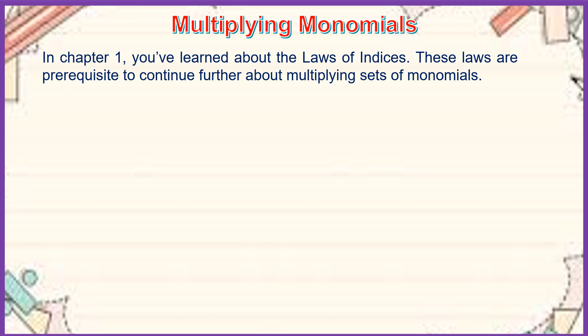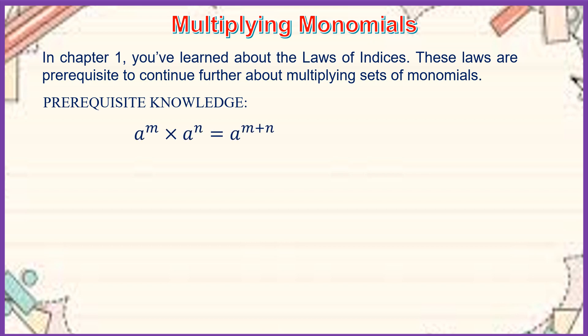In Chapter 1, you've learned about the laws of indices. These laws are prerequisite to continue further about multiplying sets of monomials. So a to the m times a to the n is equal to a to the m plus n. This is the product law.